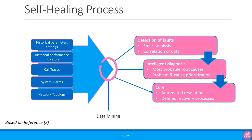As you can see, there is a log of many different inputs like historical parameter settings, historical performance indicators, call traces, system alarms, and topology information. Data mining algorithms can use this information autonomously to detect the faults, find the root cause, and automatically resolve the issue. If the problem is serious, then it would be escalated to the support team for manual resolution.